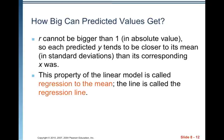R cannot be bigger than 1 in absolute value. So each predicted Y tends to be closer to its mean in standard deviations because it's got to be between 0 and 1 as far as its absolute value goes. So when you move one whole standard deviation in X, you're going to move at most one standard deviation in Y because the biggest R can be is 1. Since R usually has an absolute value less than 1, typically you're going to be moving fewer than one whole standard deviation in Y for every standard deviation in X that you move.